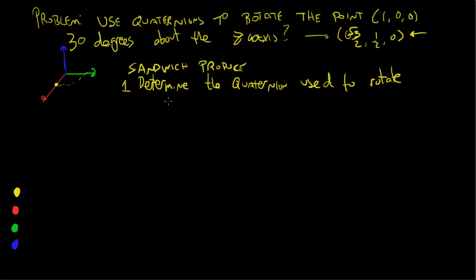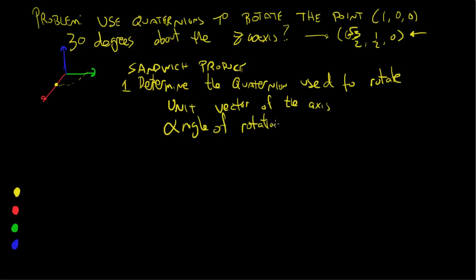There are two things needed: the unit vector of the axis of rotation, and the angle of rotation. The unit vector of the axis — it's the z-axis, so its unit vector is (0, 0, 1). The angle of rotation is 30 degrees, which is the same as π/6 — since π/3 is 60 degrees and π equals 180 degrees.